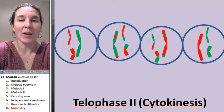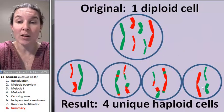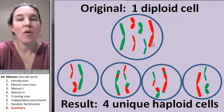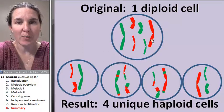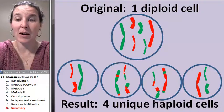There we go. And now we end up with four unique haploid daughter cells from one original diploid parent cell. That's the process of meiosis.